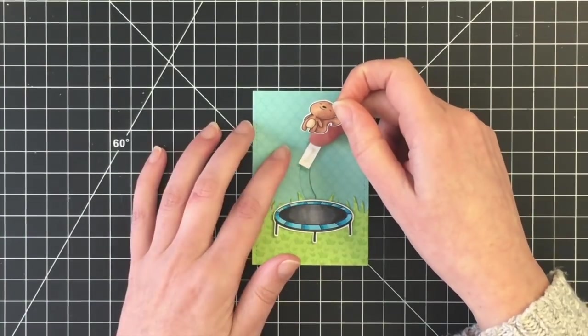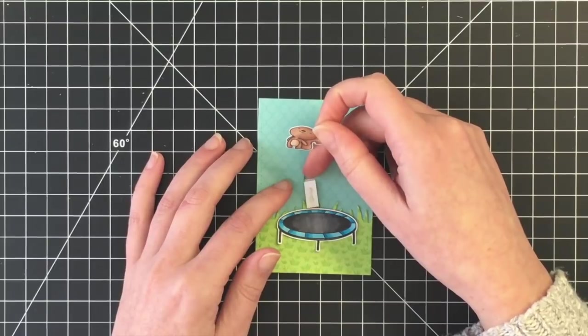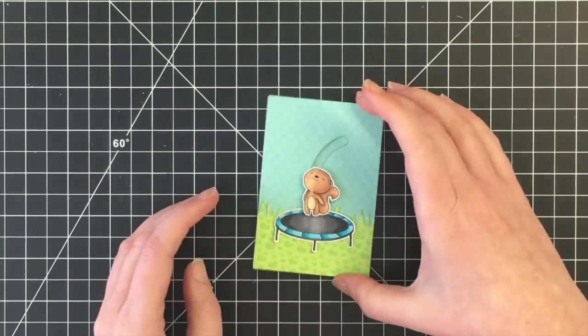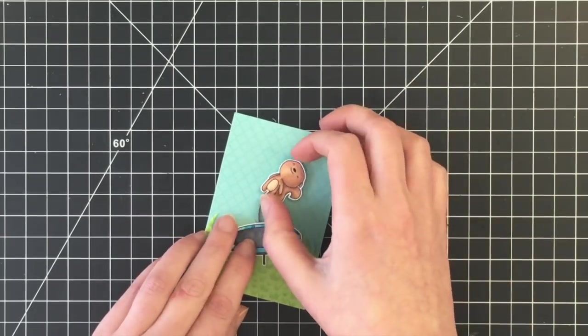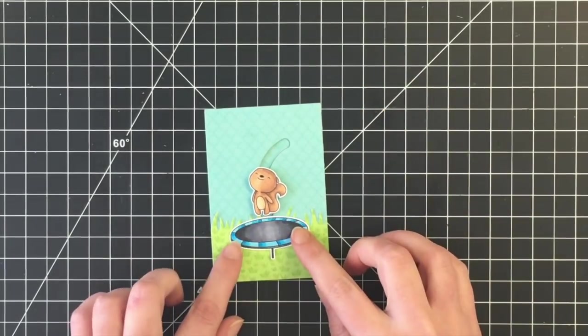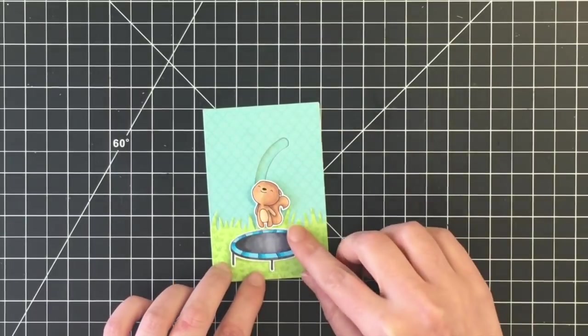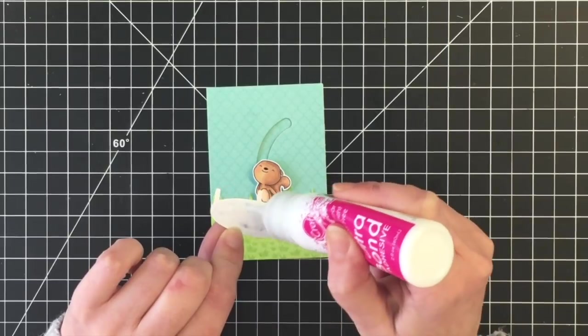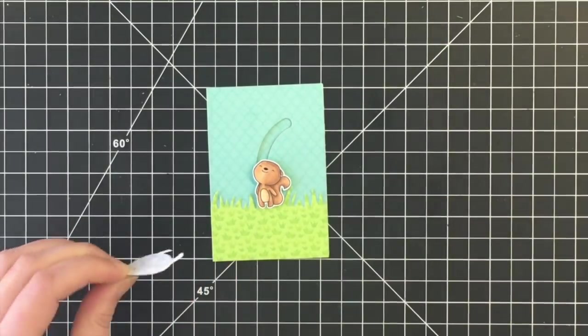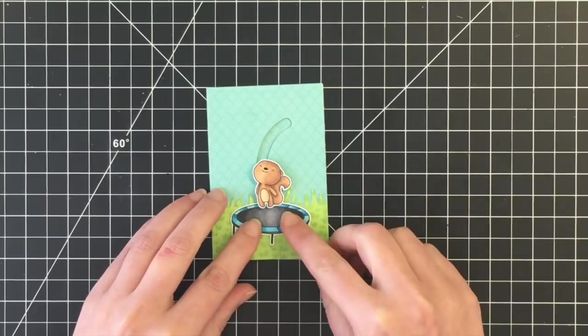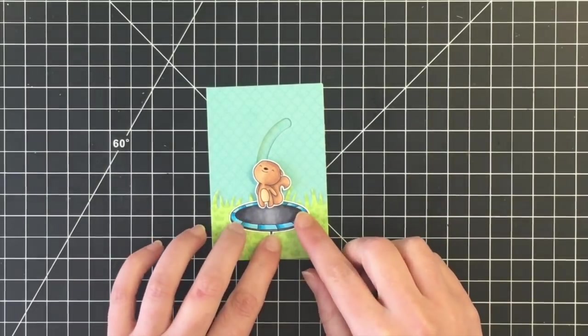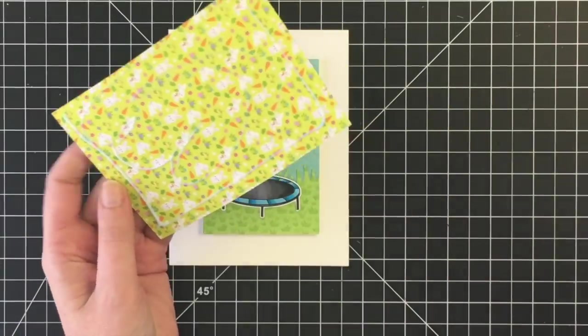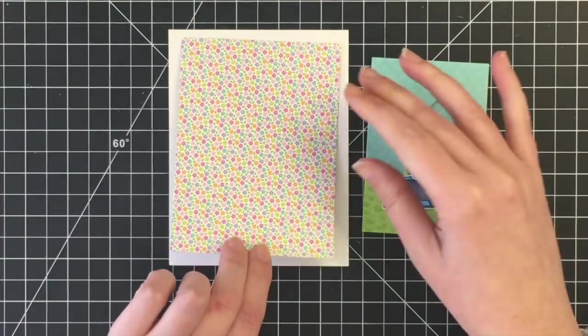I just used one layer of foam tape. I suppose if you wanted it to move a little more you could double up on the foam tape but I don't like my cards to be super bulky so that they're a bit easier to mail. So here's where I'm trying to figure out where I want the trampoline and I'm just going to adhere that straight down to my card panel here. So I don't want that popped up at all although I'm sure you could and it would look just as cute but I wanted it to make I wanted to make it look like he was actually jumping off of that.